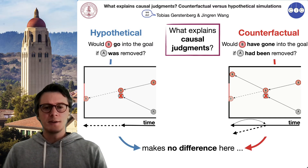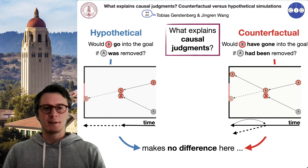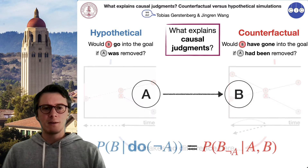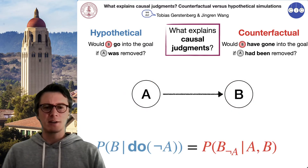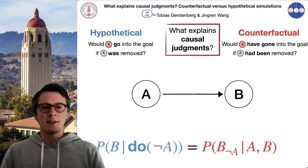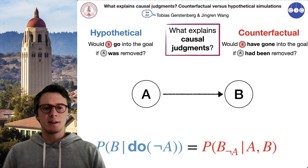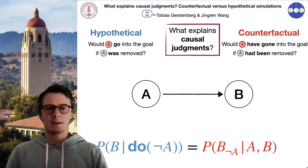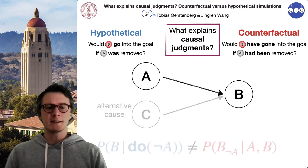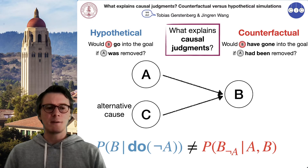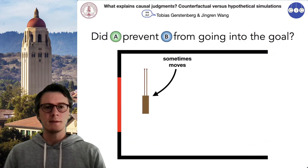It turns out that in a simple setting, this really doesn't make any difference. When there's just a single cause of an outcome, the hypothetical and the counterfactual probabilities are the same. What we need is a more complicated setting involving an alternative cause that we have some uncertainty about — and that's what we explored in this study.